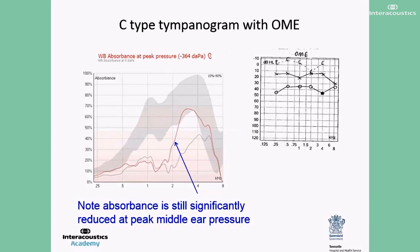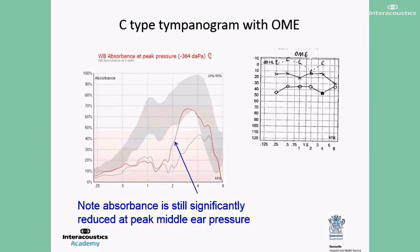Another related phenomenon with C-type tympanograms with and without effusion involves otoacoustic emissions. Titan can perform both transient and distortion otoacoustic emissions at two different pressures — ambient and peak tympanometric pressure. It can be seen that there is no difference in emission between the two pressure conditions in ears with effusion. On the other hand, when there is no effusion, otoacoustic emissions improve and are much stronger under peak tympanometric pressure than under ambient pressure conditions. So both the tympanogram and the otoacoustic emissions show improvement when measured at peak tympanometric pressure compared to ambient pressure.